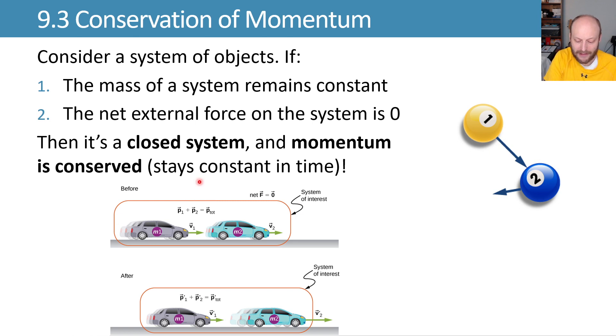Or we could combine these cars into one system and consider the combined momentum of the system, p1 plus p2, for the momentum of car one plus the momentum of car two, as our total momentum.